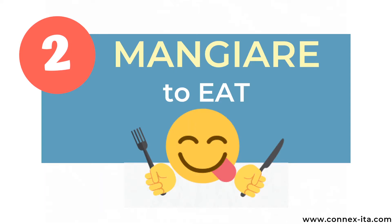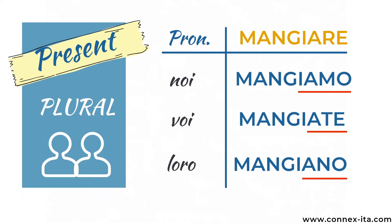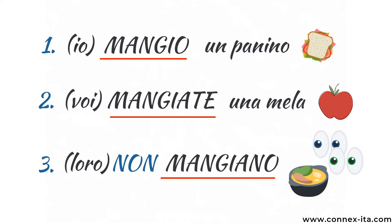Let's move on to our next verb: MANGIARE, meaning to eat. This is how you conjugate it in the singular: io mangio, tu mangi, lui/lei mangia. And in the plural: noi mangiamo, voi mangiate, loro mangiano. As you can see, there's no difference in the way this verb ends — it's the same pattern as PARLARE.